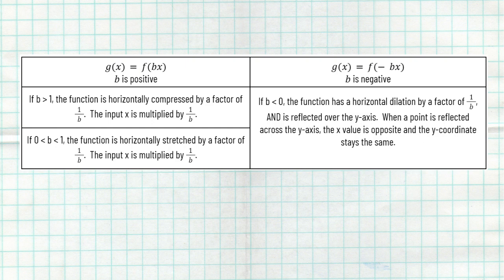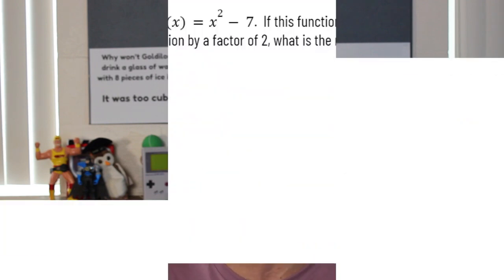Now if your b value is negative, keep in mind you still have that horizontal dilation by a factor of one over b — that is not changing whatsoever — but you also have a reflection across the y-axis. Keep in mind when a point is reflected across the y-axis, the x value is opposite and the y value actually just stays the same. Let's take a look at a couple of examples that involve these horizontal dilations.